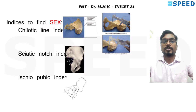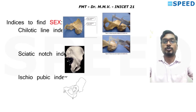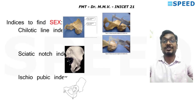A helpful hint: wherever you see an index name, the first word will be the denominator. For example, ischio-pubic index — ischium is in the denominator, pubis is in the numerator. There are only one or two exceptions. The ischio-pubic index is also called the washbin index and is useful to find both sex and species.